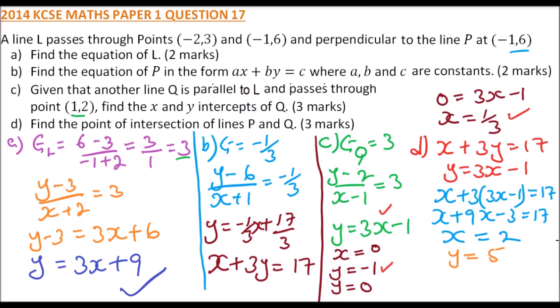The point of intersection of p and q is 2, 5. That's how you work out this question, and I hope you have followed how we have gone all about it.